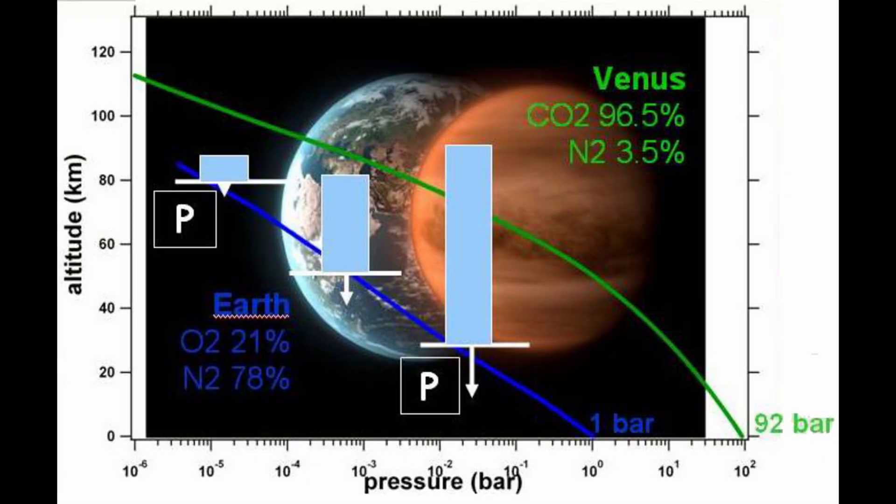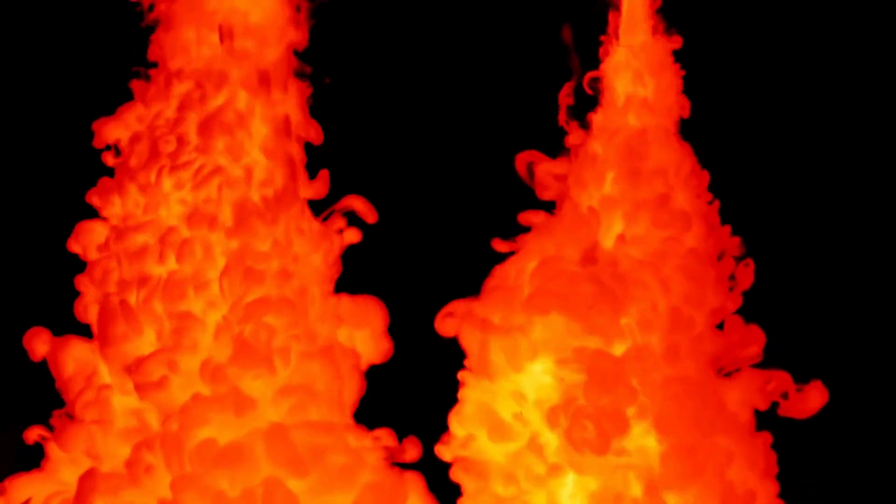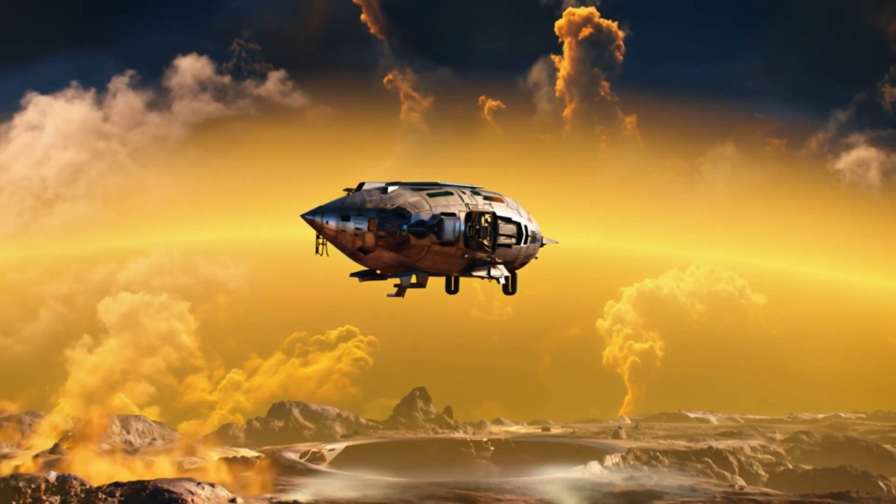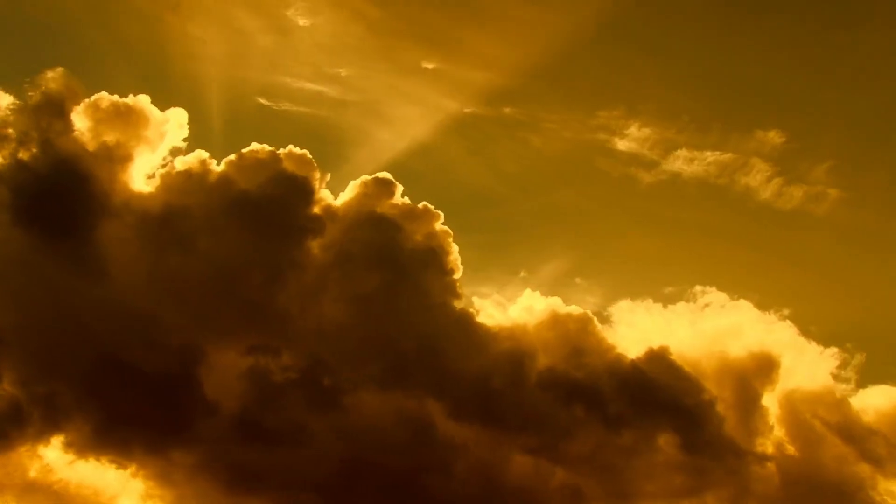Venus's atmosphere is like a weighted blanket from your nightmares. It's 96% carbon dioxide, and super thick. How thick? Imagine being 3,000 feet underwater, but with lava bubbles. That's how much pressure you'd feel standing on the surface. One wrong move, and your spacecraft would crumple like a soda can in a trash compactor.